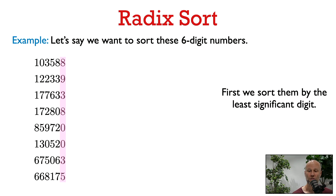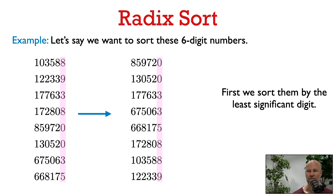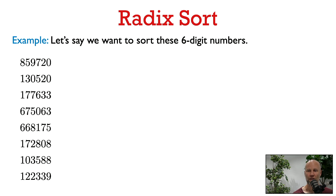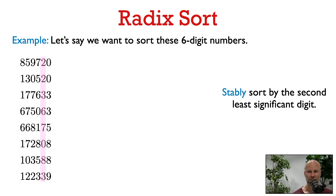What we're going to do is first sort them by the least significant digit. Now the numbers whose least significant digit is zero come first, then those whose least significant digit is 3, 5, 8, etc. Here's the list we got — the numbers sorted by the least significant digit. And now we're going to use a stable sort to sort them by the second least significant digit, that is by the numbers in this pink column here.